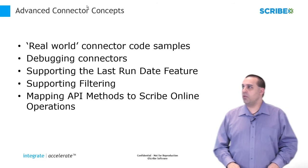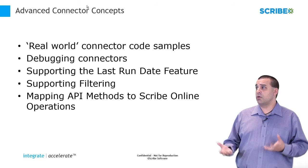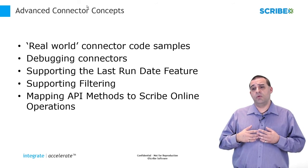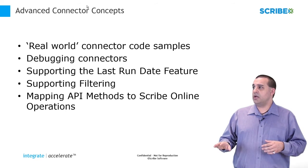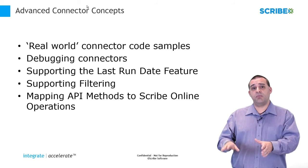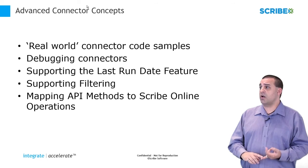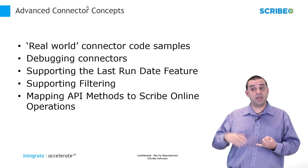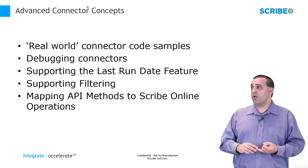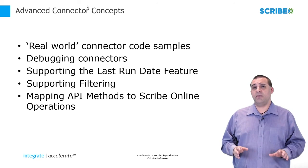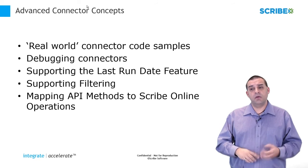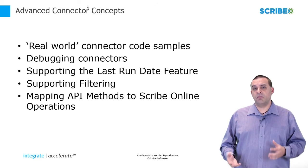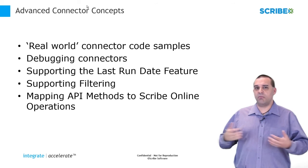After the Hello World example, we'll move on to advanced concepts, including real-world connector code examples using our GoToWebinar connector sample. We'll talk about how to debug your connector and differentiate that from debugging an online map. We'll also cover supporting last run date features, queries and filters, and how to map your API methods to Scribe Online's methods — such as updates, creates, and upserts — when your API has operations that don't fully map into those.